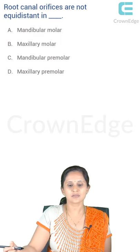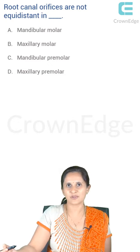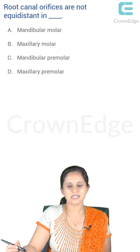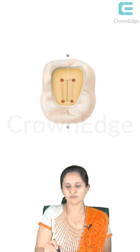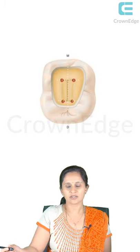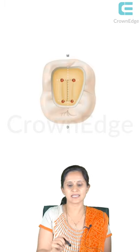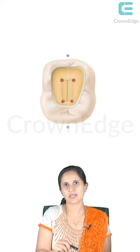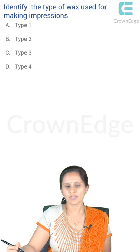What are the root canal orifices? Root canal orifices are not equidistant — anyone well versed with root canal anatomy knows this. According to the laws put forth by Krasner and Rankow, when you draw a midline through the pulp chamber, the pulp canals are equidistant from the midline. The only case where they are not equidistant is in a maxillary molar tooth.